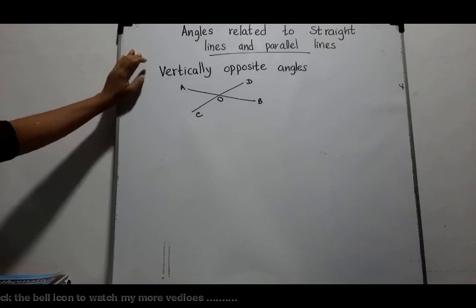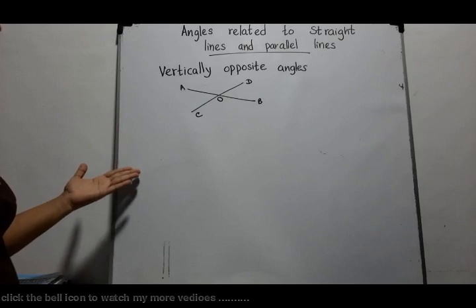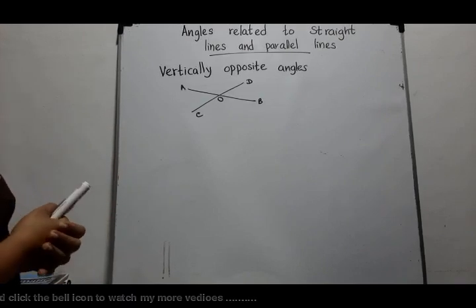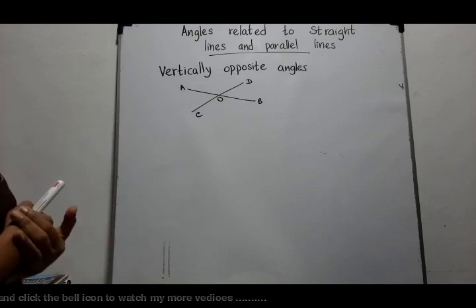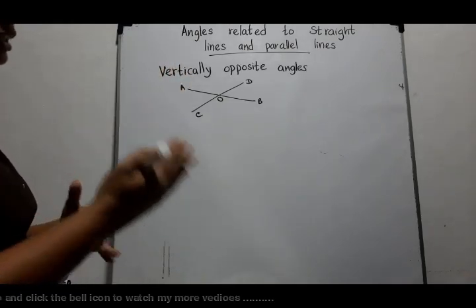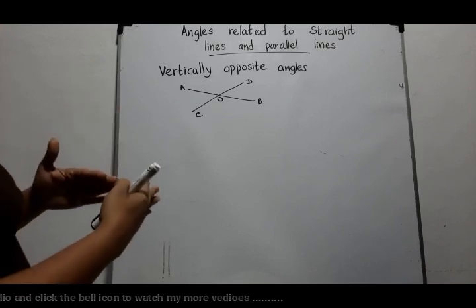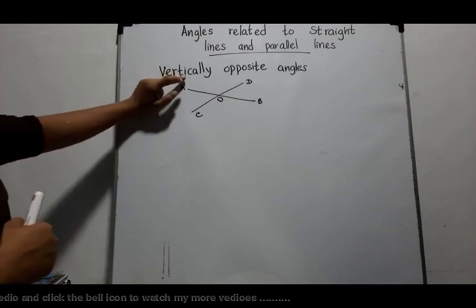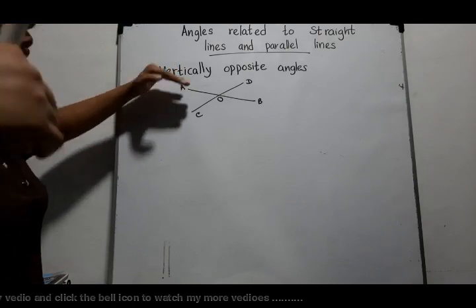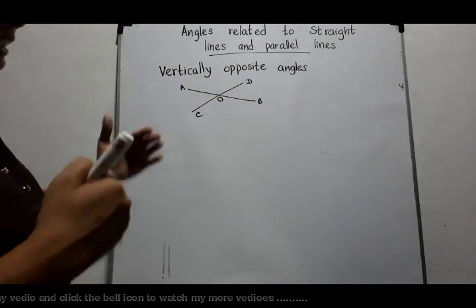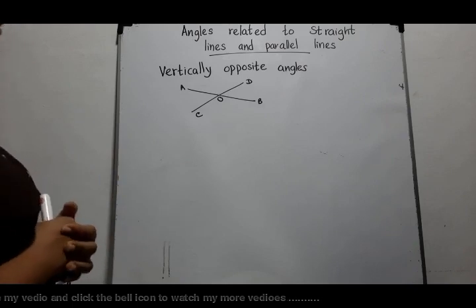Now, we are going to learn about vertically opposite angles. You have learned vertically opposite angles in Grade 8. You know that vertically opposite angles are equal in magnitude. In this grade also, we have to recall that knowledge.